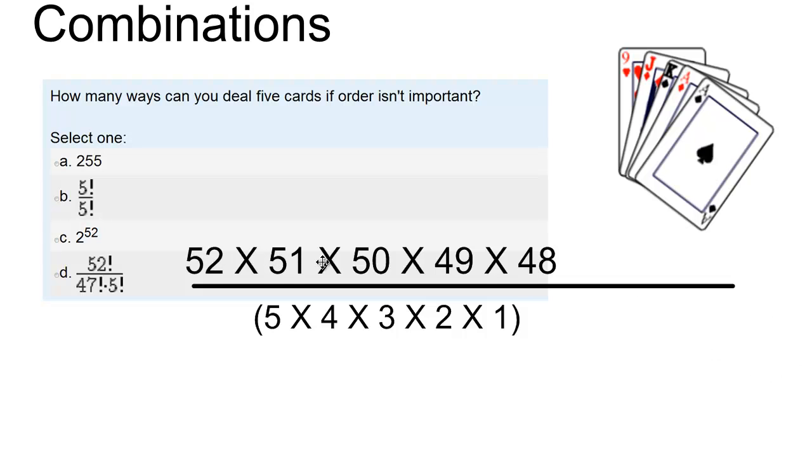Now I have the number of permutations of 5 cards dealt from a 52 card deck on the top, but I'm not interested in the number of permutations of those 5 cards, I'm only interested in the combinations. So I divide out the possible permutations with the 5 factorial on the bottom.